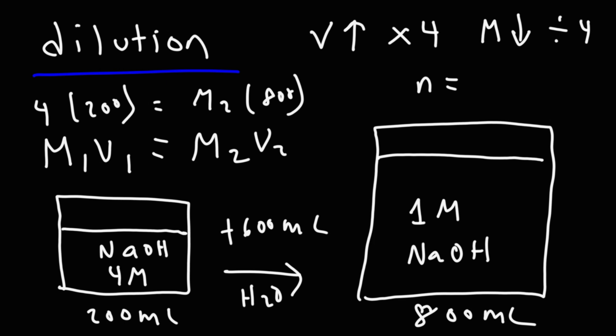That's how you could use that formula. Now, keep in mind, n is equal to m times v. The moles is equal to the molarity times the volume. So n is equal to m1 v1. It's also equal to m2 v2.